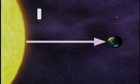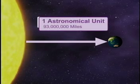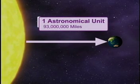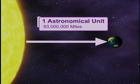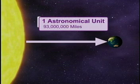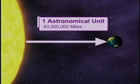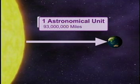The astronomical unit, or AU, currently in use is derived from the average mean distance between the Earth and the Sun, which is approximately 93 million miles.